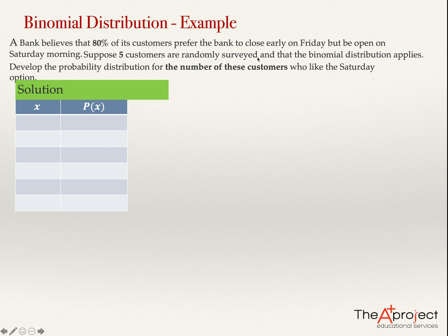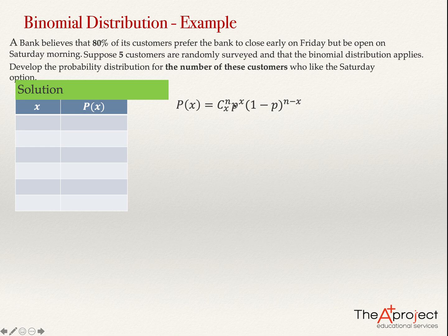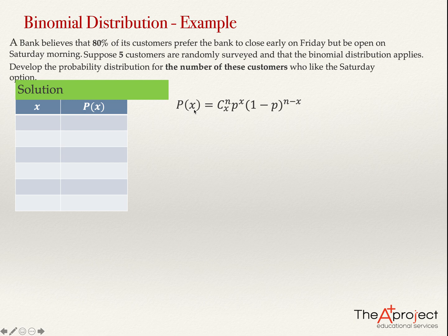Because we are considering this a binomial distribution, I'm going to use the binomial formula: the combination of N objects taken X at a time, times the probability P raised to the power X — where P is the probability in each trial that the customer prefers the Saturday option (0.8) — times 1 minus P to the power N minus X. The possible values of X are 0, 1, 2, 3, 4, 5.